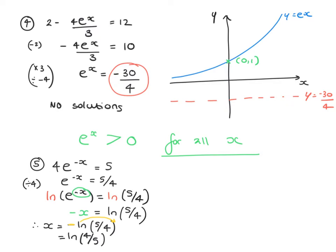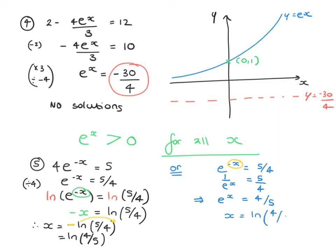An alternative method: e to the negative x equals 5 over 4 means 1 over e to the x equals 5 over 4. Rearranging: e to the x equals 4 fifths, so x equals ln of 4 fifths — the same answer by a different route.